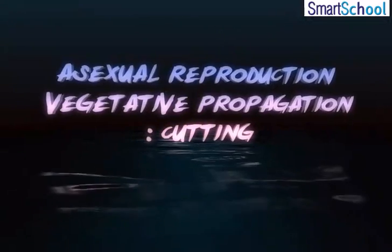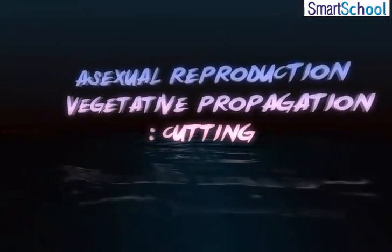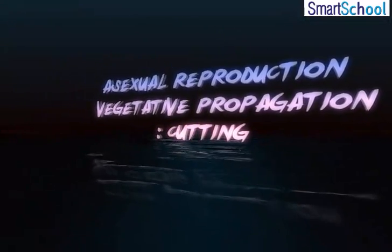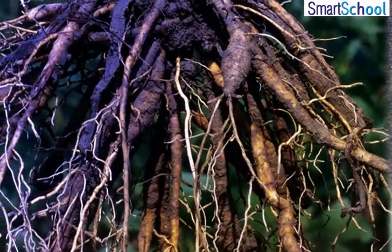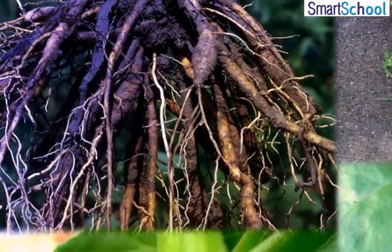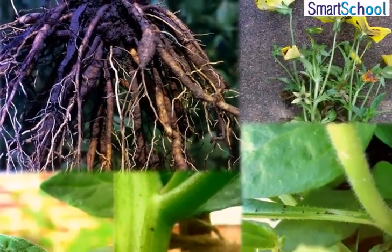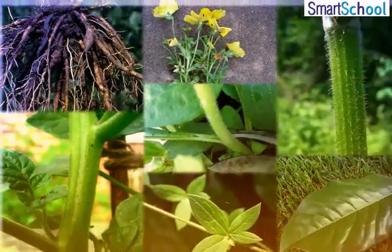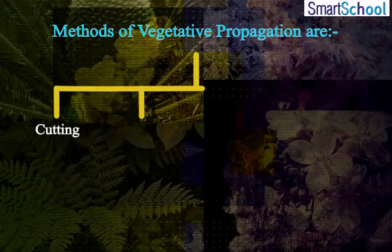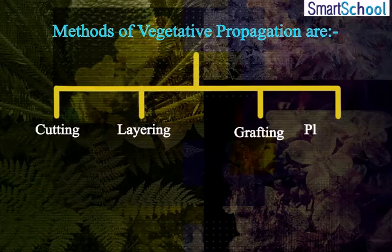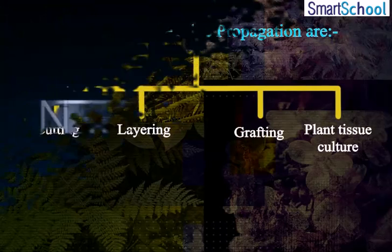Asexual Reproduction: Vegetative Propagation — Cutting. There are many plants whose parts such as root, stem, and leaves develop into new plants under appropriate conditions. Methods of Vegetative Propagation are: Cutting, Layering, Grafting, and Plant Tissue Culture.